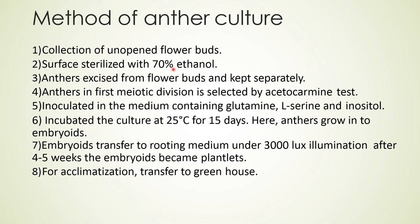Methods of anther culture: collection of unopened flower buds, surface sterilized with 70% ethanol. The anther is excised from the flower bud and kept separately. The anther in first mitotic division is selected by acetocarmine test, then inoculated in a medium containing glutamine, L-serine, and inositol. The culture is incubated at 25°C for 15 days, where anthers grow into embryoids. Embryoids are transferred to rooting medium under 3000 lux illumination. After 3 to 5 weeks, the embryoids become plantlets, which are then transferred to the greenhouse for acclimatization.